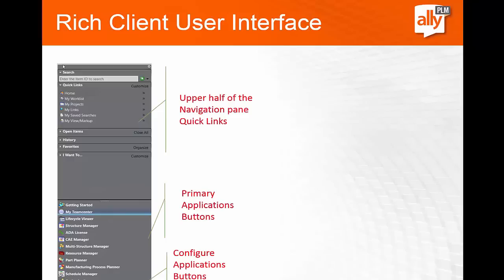The next section is the navigation section, which has an upper half and a lower half. The upper half has Quick Links — tools configured to go to history, recent history, or save favorites. You can also save searches. If you're working on a project today and want to get back to it next morning, you can save it as a search, a favorite, or put it in my project or my work list folder.